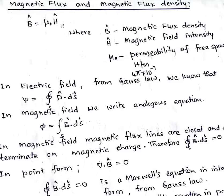We have the relation B = mu0 times H, where B is magnetic flux density, H is magnetic field intensity, and mu0 is the permeability of free space. This is only for free space or vacuum. For a general medium, mu = mu0 times mu_r. The standard value of mu0 is 4π × 10^(−7) H/m — similar to how epsilon0 = 8.854 × 10^(−12) in electric fields.